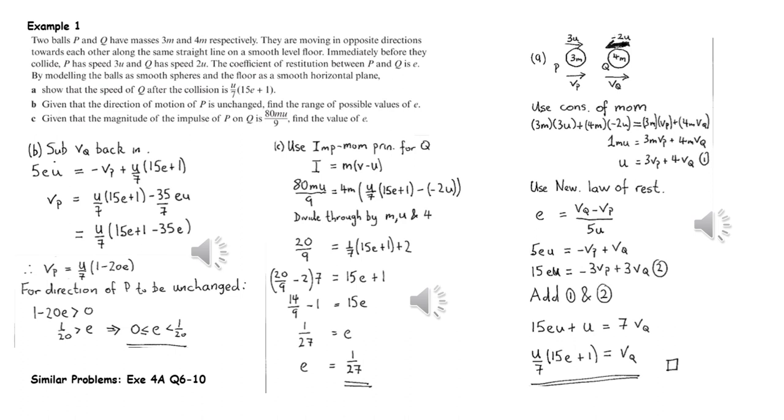For part C we're given the magnitude of the impulse, so we could consider either P or Q and use the fact that the impulse is equal to change in momentum for either object. We just need to take into account the direction of the impulse. The impulse on Q is away from P and the impulse on P is away from Q, and that's telling us which way is positive in both cases.